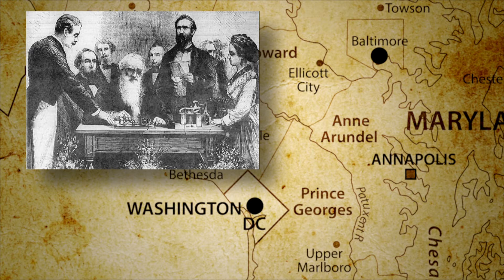Mr. Morse sent the first Morse code message in 1844, and that message went from Washington, DC to Baltimore, Maryland. That message was so important for mass communication because it was the first time in human history that a message could be sent and received almost instantaneously. And that actually changed the world.